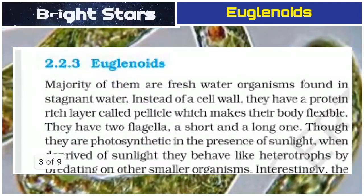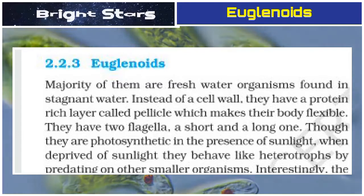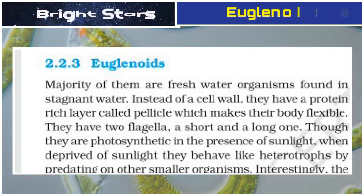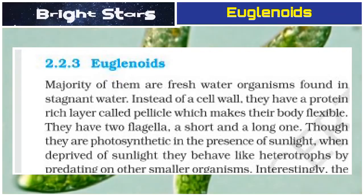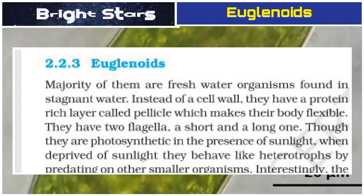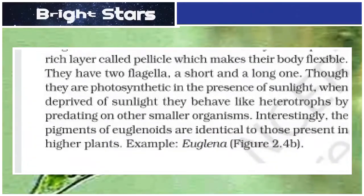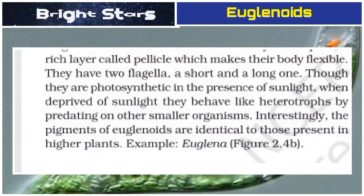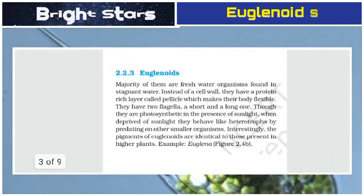Majority of euglenoids are freshwater organisms found in stagnant water. Instead of a cell wall, they have a protein-rich layer called pellicle, which makes their body flexible. They have two flagella — a short and a long one. Though they are photosynthetic in the presence of sunlight, when deprived of sunlight they behave like heterotrophs by predating on other smaller organisms.